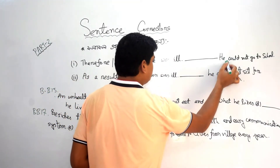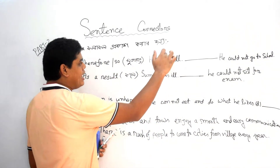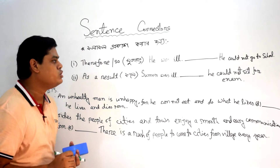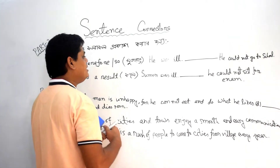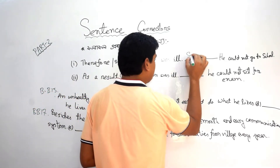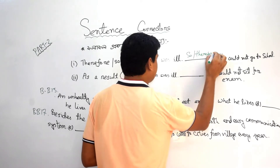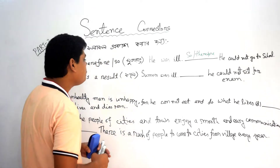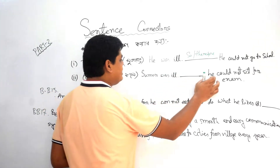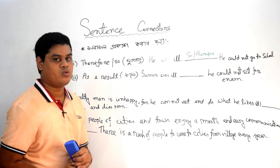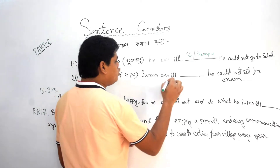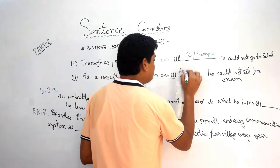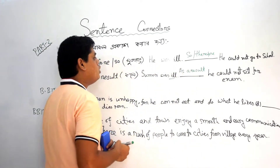Therefore, he could not go to school. He was ill. As a result, he could not sit for the exam. That was the result — he was ill, so he could not sit for the exam.